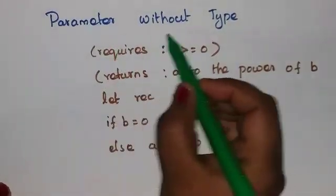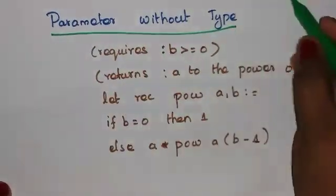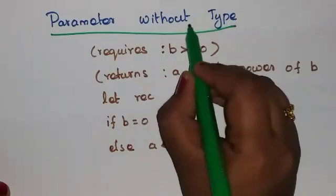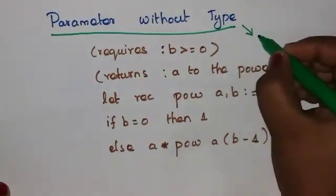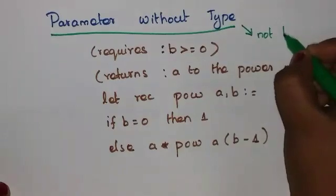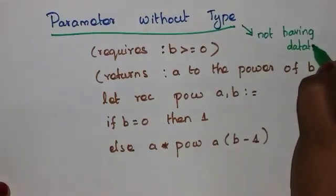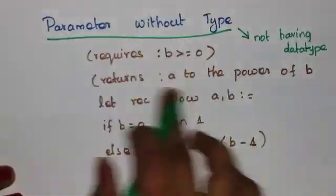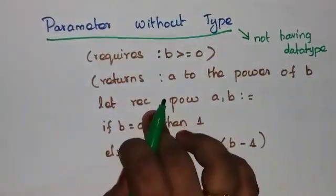Coming to the next topic: parameter without type. Parameter without type means not having a data type — this parameter does not have a data type.